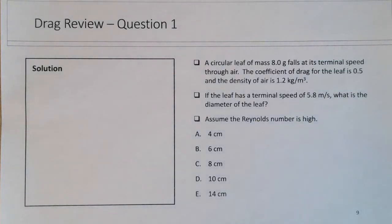In this drag review question, we're looking at a circular leaf of small mass, 8 grams, falling at its terminal speed through air. We're given the drag coefficient to be 0.5 and the density of air to be 1.2 kg per meter cubed. If the leaf has a terminal speed of 5.8 meters per second, what is the diameter of the leaf? Assume the Reynolds number is high, so we're using high Reynolds number drag.